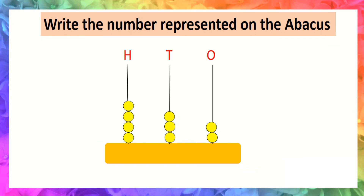Now the next question is to write the number represented on the abacus. We will count the beads. At ones place, two beads are given, so the ones place digit is two. At tens place, three beads are given, so the tens place digit is three. At hundreds place, four beads are given, so the hundreds place digit is four. The number is 432.